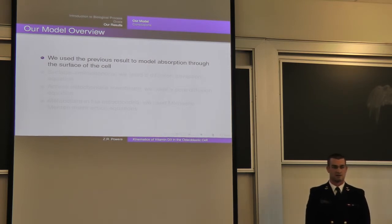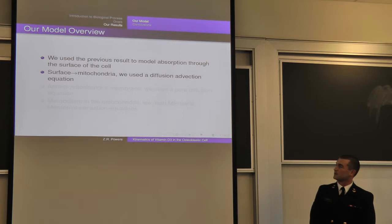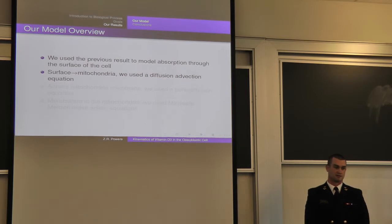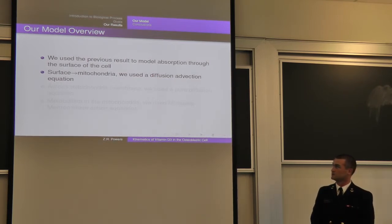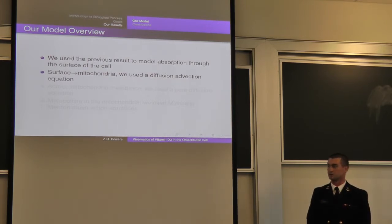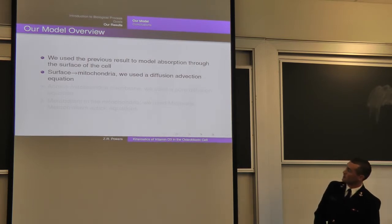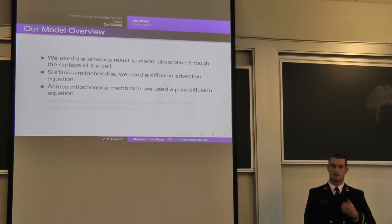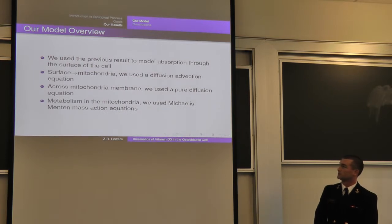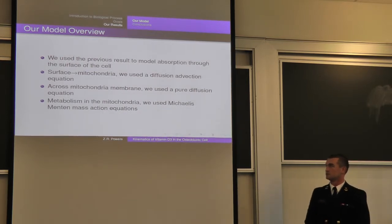From the cell surface to the mitochondria, we're using a diffusion-advection equation to model movement along the cytoskeletal tract. Inside the cell, all transport is along tracks that use motor proteins that latch on to the D-binding protein and 25D and essentially pull it along the tracks to the center of the cell. Once we reach the mitochondria, we use a pure diffusion equation to represent entering the mitochondria, and then once inside, we use a Michaelis-Menten mass-action equation to model the metabolism from 25D to 125D.